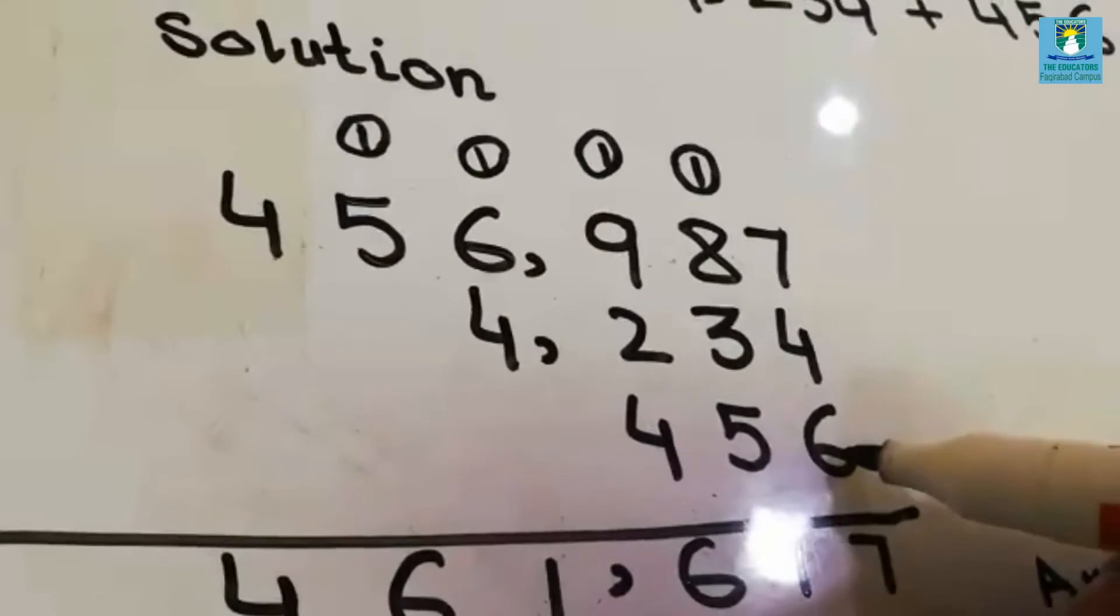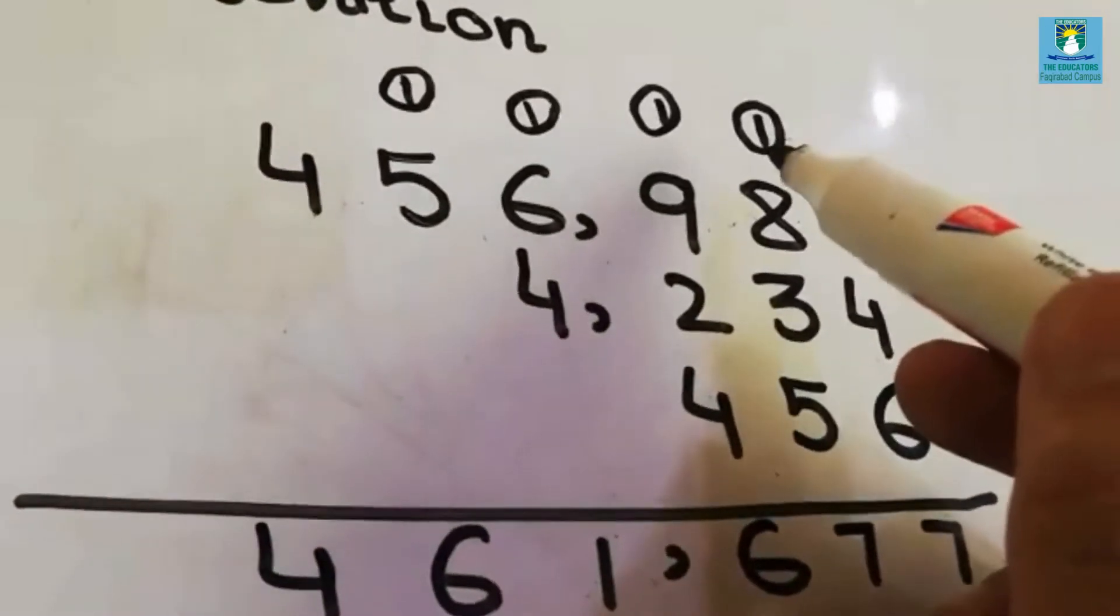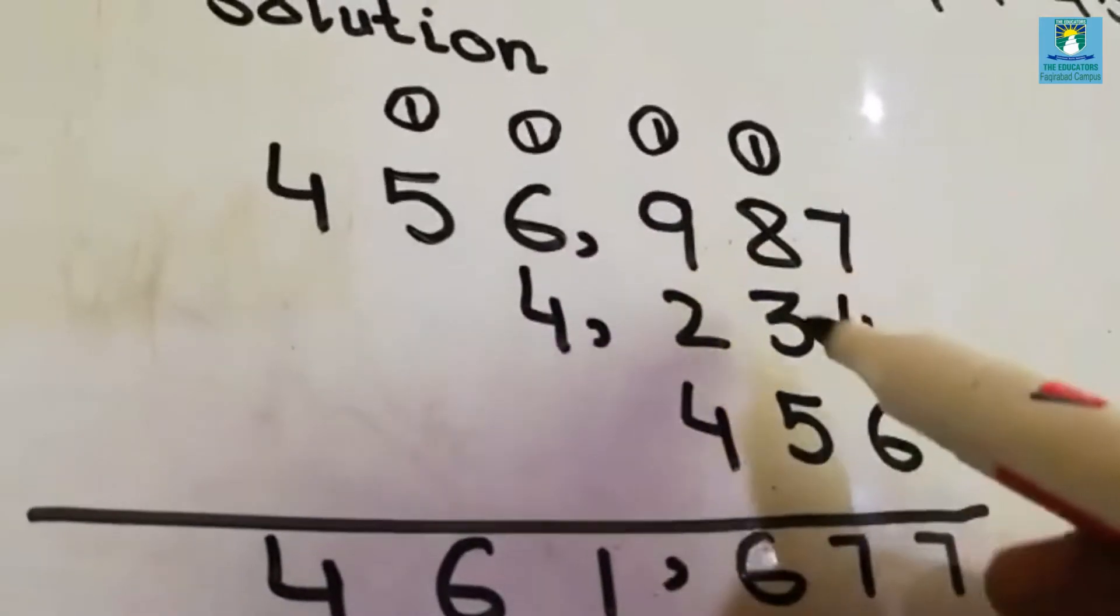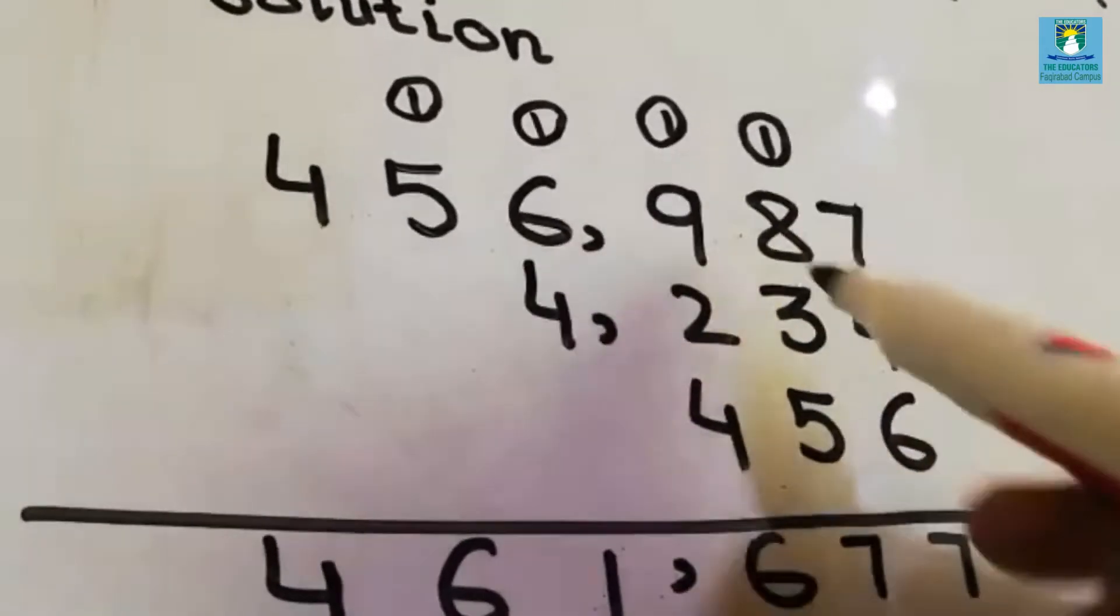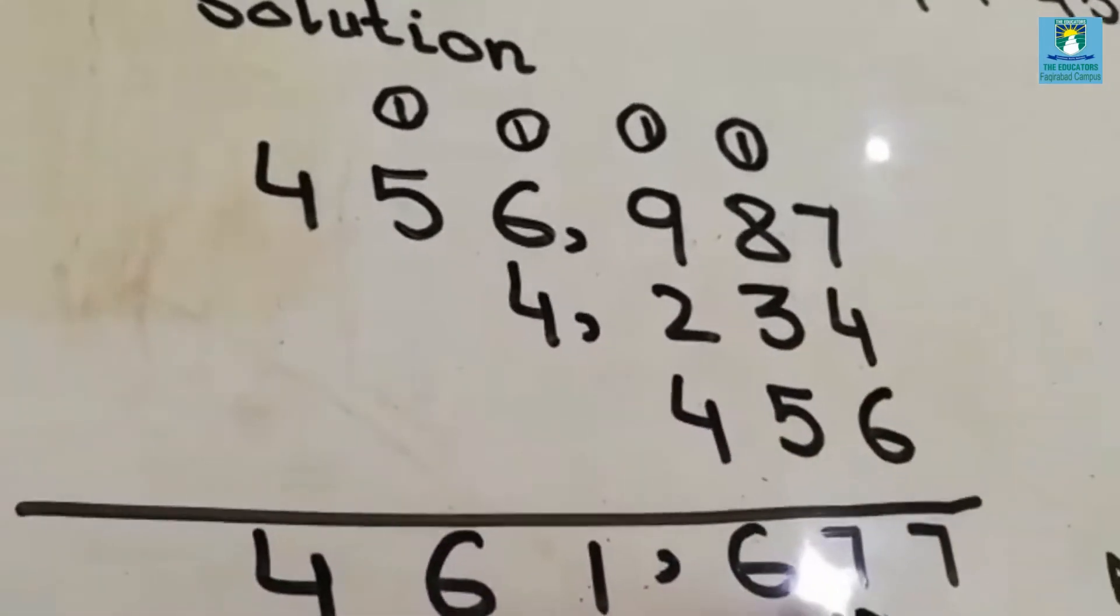6 plus 4 is 10, 10 plus 7 is 17. 7, 1 carry. 8 plus 1 is 9, 9 plus 3 is 12, 12 plus 5 is 17. 1 carry.